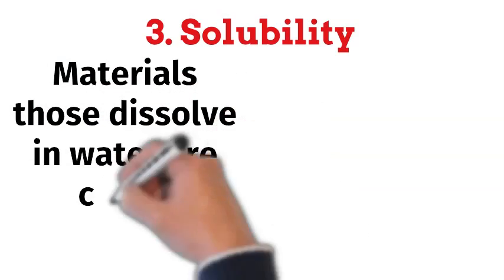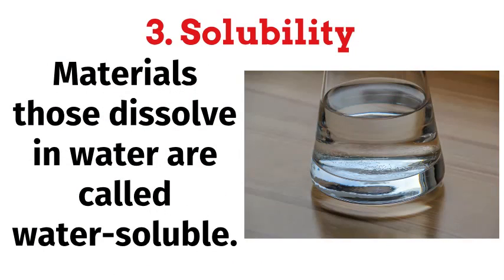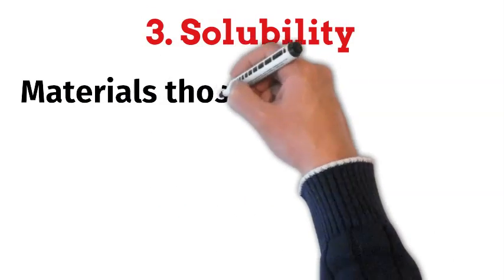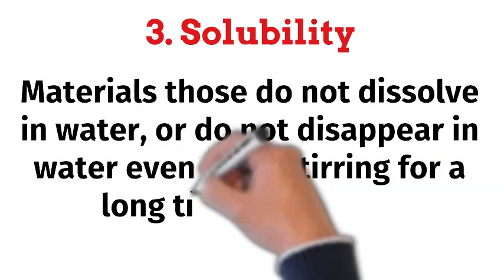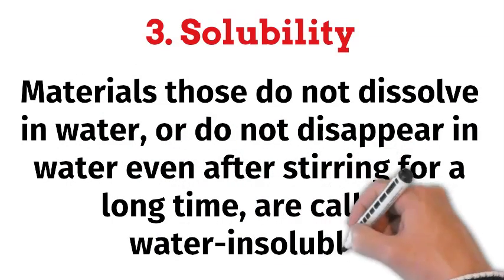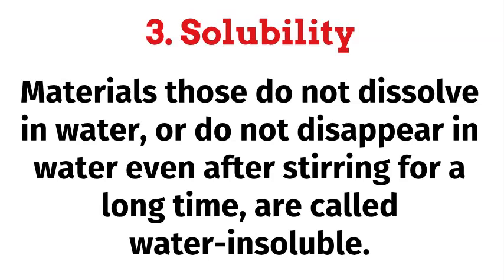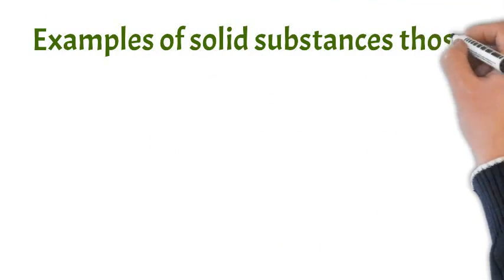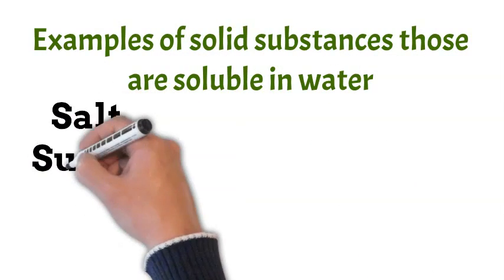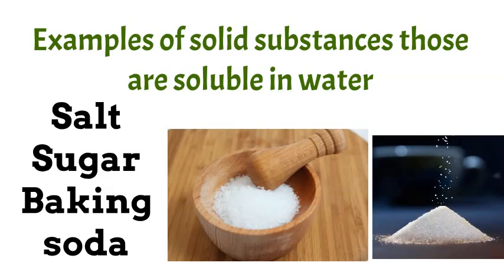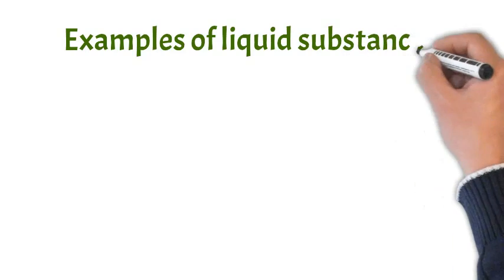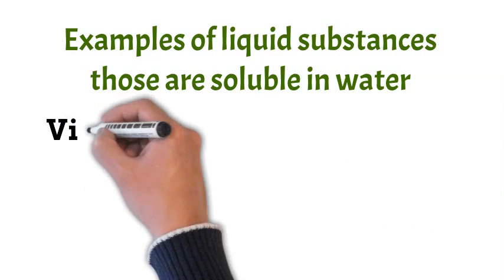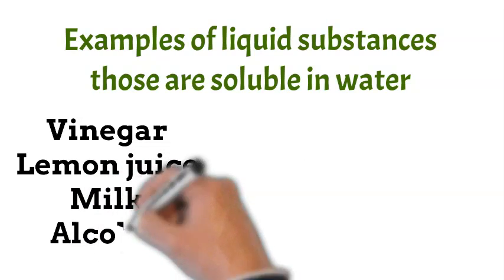Third, the solubility. Materials that dissolve in water are called water soluble. Materials that do not dissolve in water, even after stirring for a long time, are called water insoluble. Examples of solid substances that are soluble in water are salt, sugar, baking soda, etc. Examples of liquid substances that are soluble in water are vinegar, lemon juice, milk, alcohol, etc.